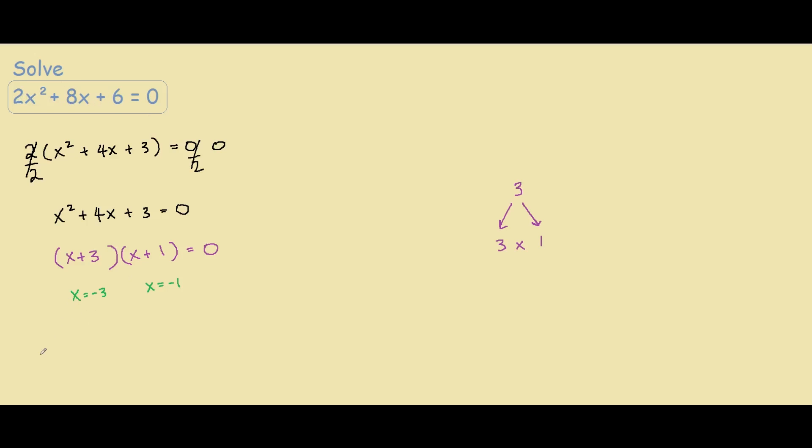So let's just do that. For negative 3 we have 2 times negative 3 squared plus 8 times negative 3 plus 6 equals 0. So we have 2 times 9 is 18, 8 times negative 3 is negative 24 plus 6. And if this is true, it is supposed to equal 0. So 18 plus 6 is 24 minus 24, 0 equals 0.